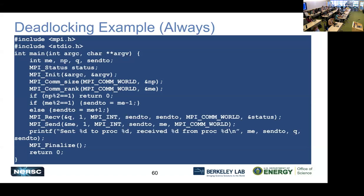This code always deadlocks because if you trace through with a partner, both processes hit the receive before either sends. Since receive is blocking, both sit waiting for the other to send forever, but neither ever gets out of receive to execute the send. That's the deadlock.